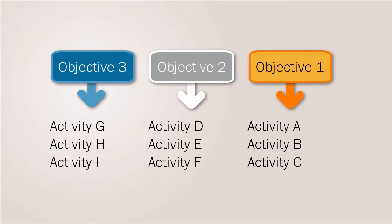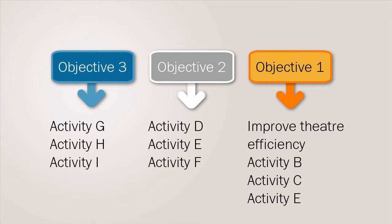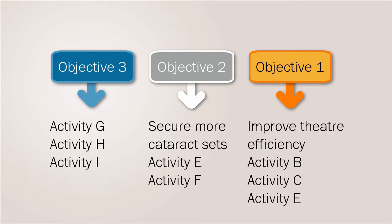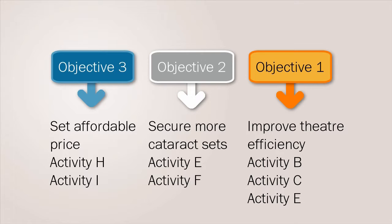Many activities need to be done to achieve each of these objectives — for example, improving theatre efficiency, securing additional cataract sets and consumables, and ensuring that the anticipated demand for surgery is costed and an affordable price set for patients. It is tricky to try and do all of these at once, and sometimes it's not even possible.